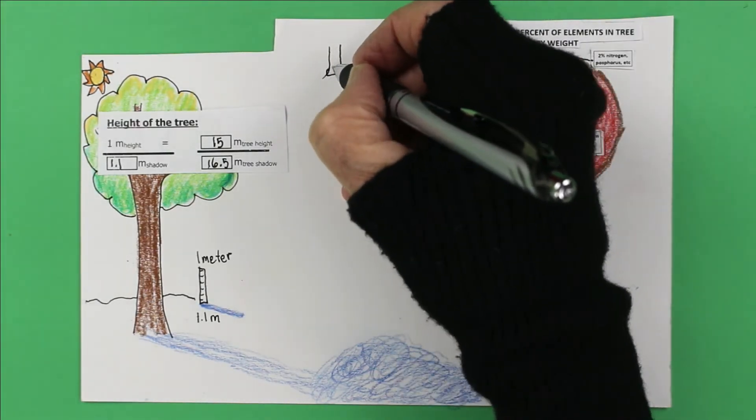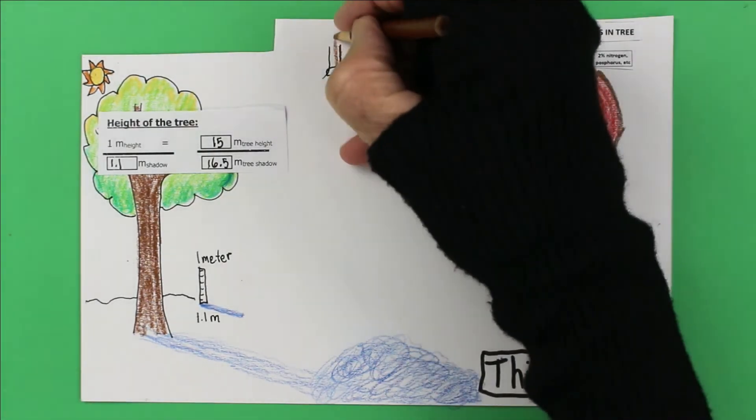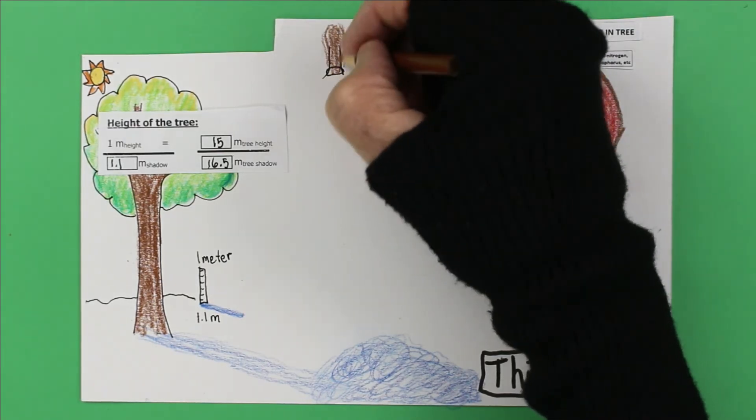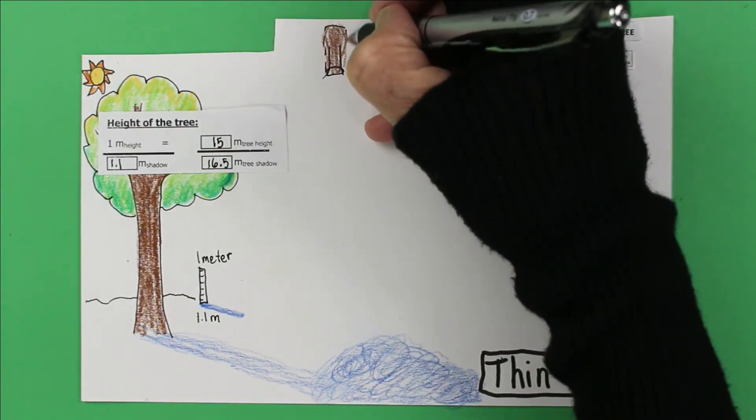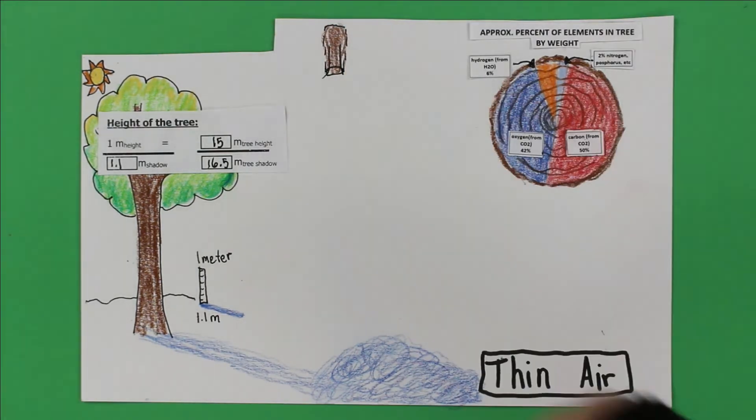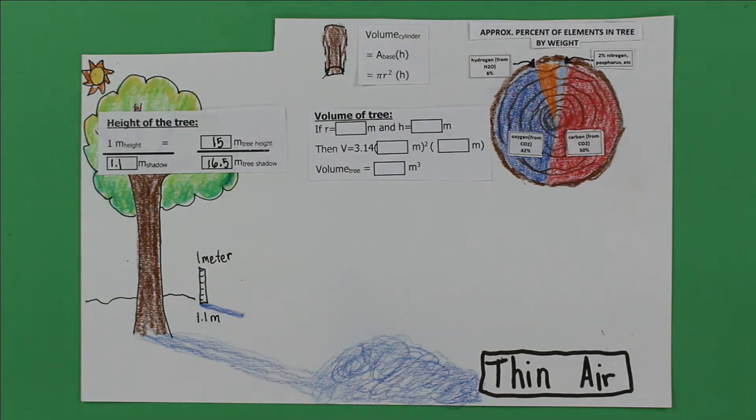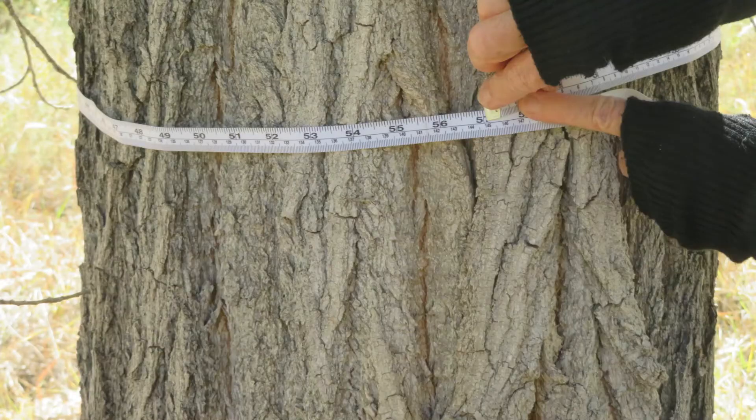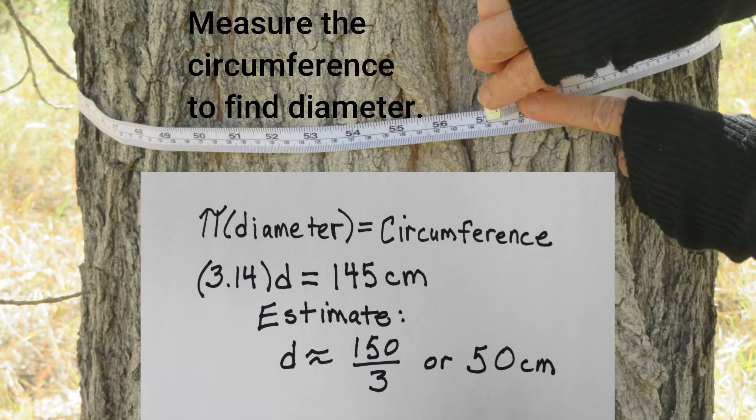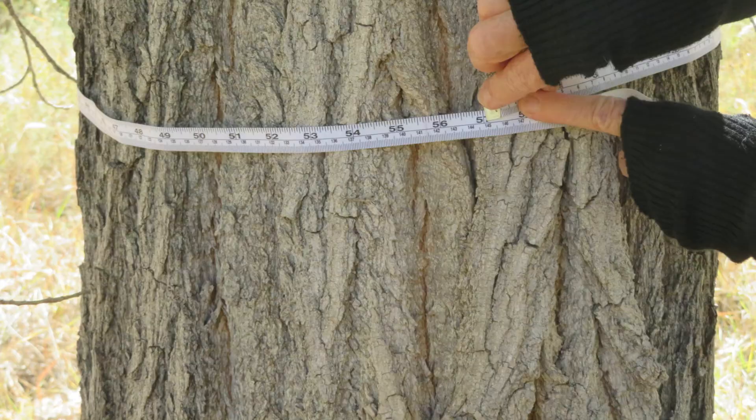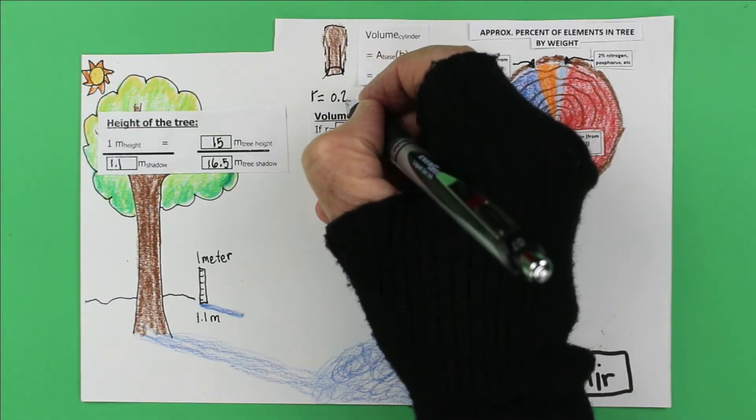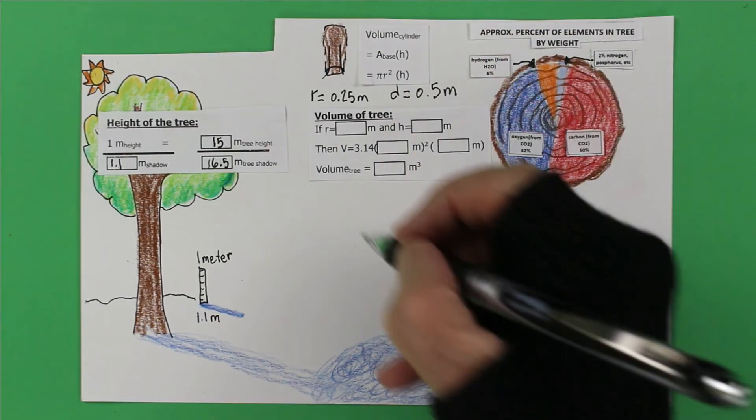Now I'm going to pretend the tree's trunk and its branches fit into a cylinder shape, rising from the ground. We're going to ignore the roots. To find the volume of the visible tree, we're going to have to find the diameter and the radius first. It looks like the diameter of my tree is about 0.5 meters. So the radius is about 0.25 meters.